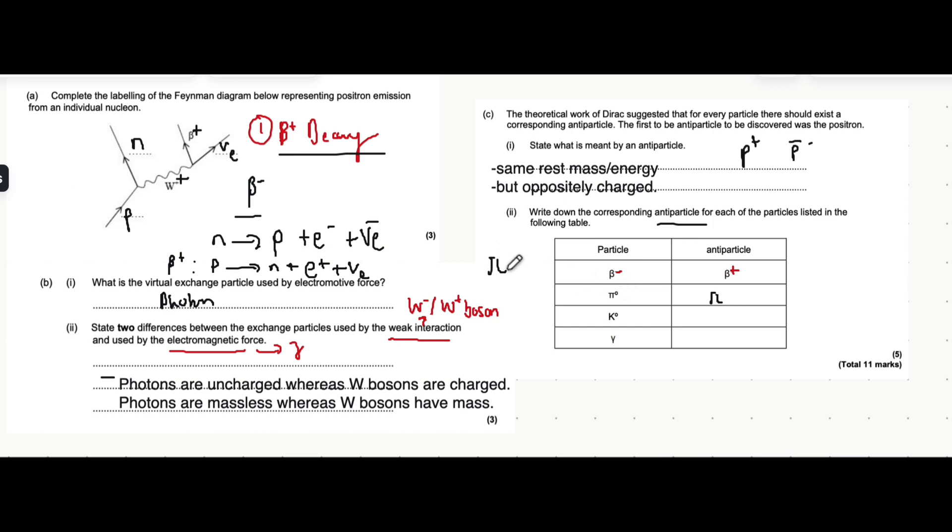If you had a pi plus meson, the antiparticle would be a pi minus meson. And if you had a pi minus meson, the antiparticle would be a pi plus meson, the oppositely charged. But the opposite of a neutral charge is just that neutral charge. So it's actually itself.